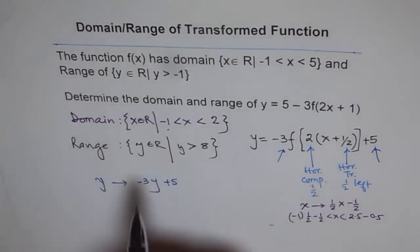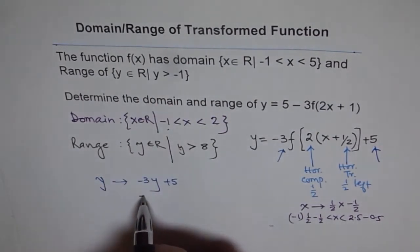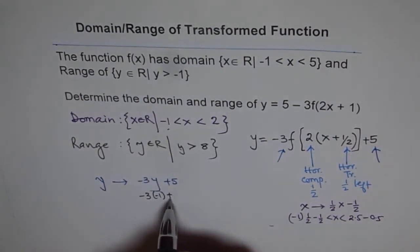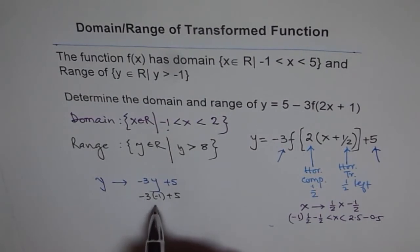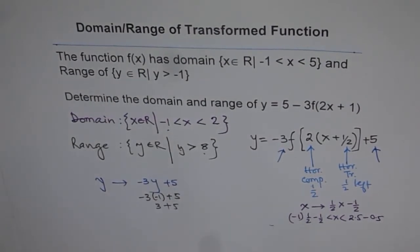We'll replace y with minus one here. So we get minus three times minus one plus five, which is three plus five is eight. So that is how our domain and range is going to change for the transformed function.